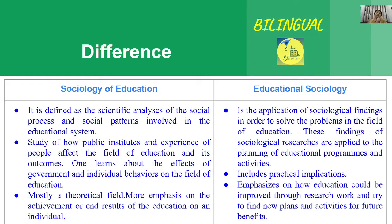Educational sociology, on the other hand, is the application of sociological findings in the field of education — similar to how educational psychology is the application of psychological principles to education, and educational technology applies technological principles to education. Educational sociology applies sociological findings and implements them in education in order to solve problems in the field of education. These findings from sociological research are applied to the planning of educational programs and activities.